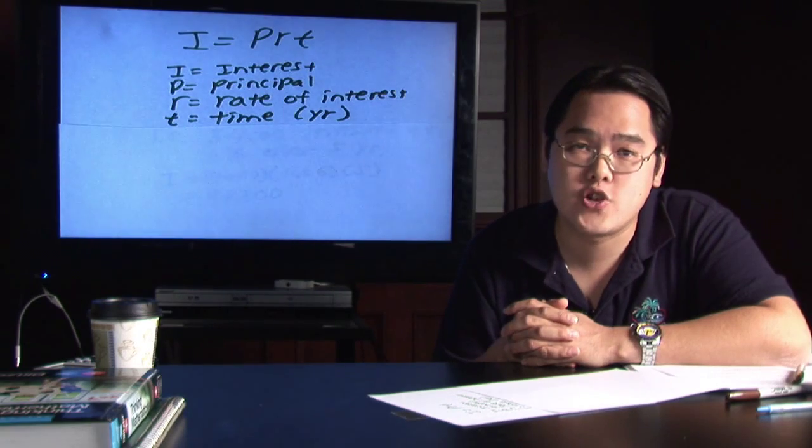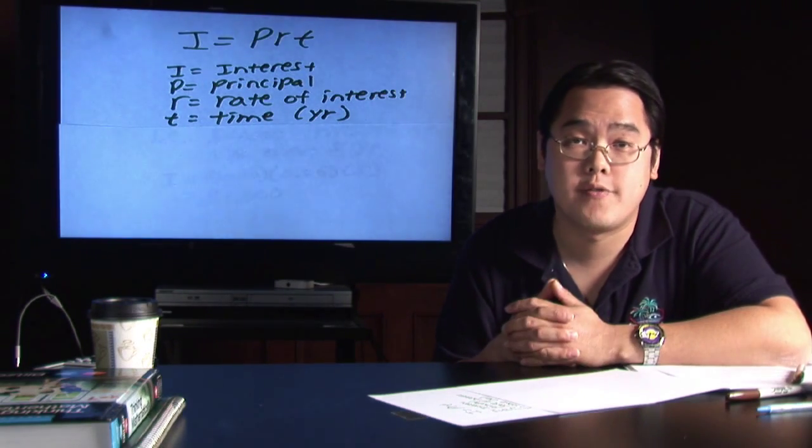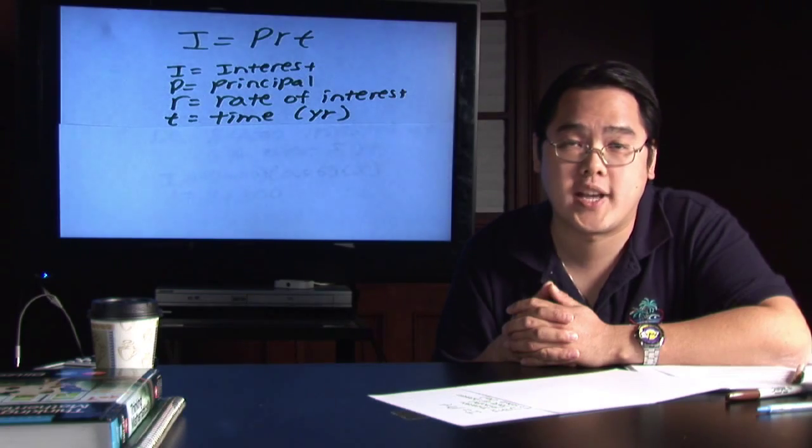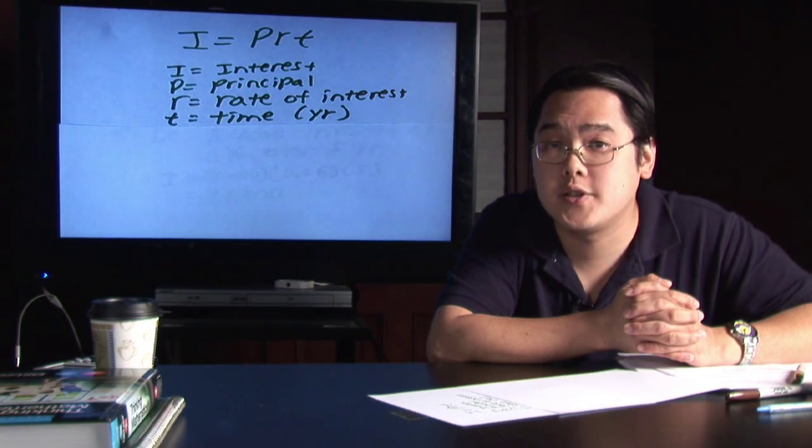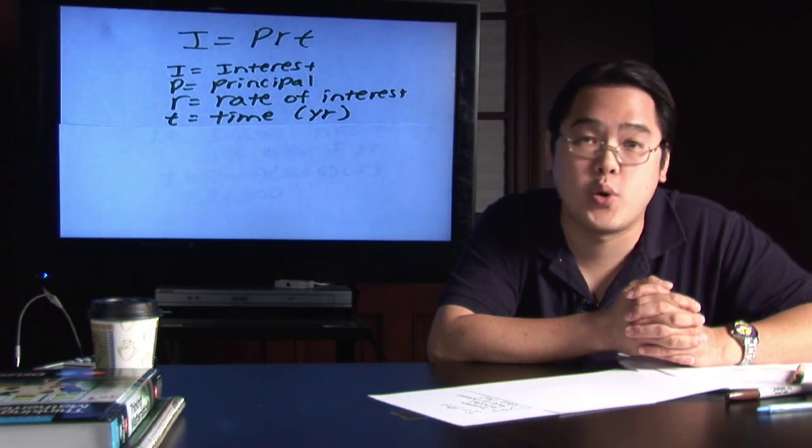I is interest. That's how much interest you are interested in figuring out how much your account is earning. P is principal. That is how much money you are depositing from the very beginning, assuming that you don't take it out or add more in.